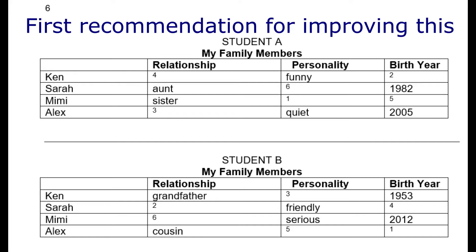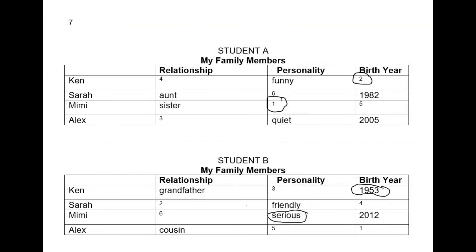So here is my first recommendation for improving this activity. You can see that I've put numbers in each blank box randomly to indicate which one to ask first, second, etc. Now I, student B, have to really listen because I don't know what the next question will be. Like this: what is Mimi's personality? Serious. When was Ken born? 1953.